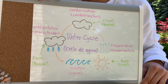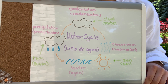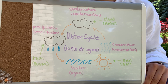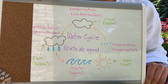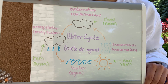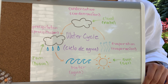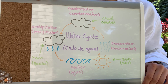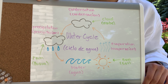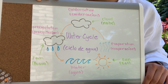Hola, me llamo Isabel and today we are going to be learning about the water cycle, el ciclo de agua. The water cycle is the cycle of water on the ground to clouds in the air and then to the water back on the ground again.